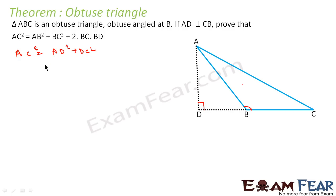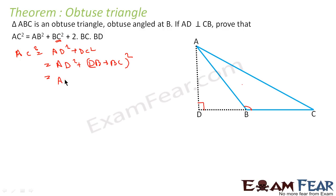DC can also be written as DB + BC. So we get AC² = AD² + (DB + BC)². This becomes AD² + DB² + BC² + 2·BC·BD, and here I get the BC² term I was looking for.